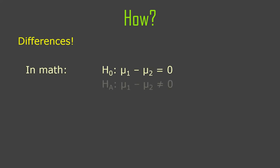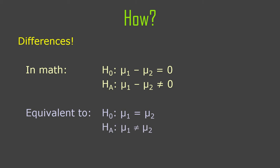We reduce everything to differences. In statistics, it's very common to come up with a single sampling distribution by reducing everything to a single number. We take these two means and subtract them from each other, producing a single number. So our null hypothesis is mu1 minus mu2 equals zero, or mu1 minus mu2 is not equal to zero for a two-tailed test. This is equivalent to saying mu1 equals mu2, or mu1 is not equal to mu2. You can write your hypotheses either way.